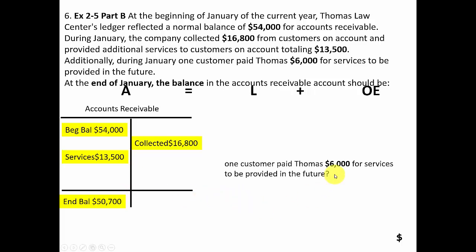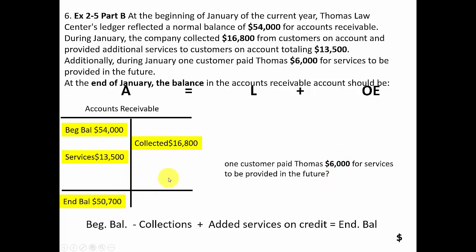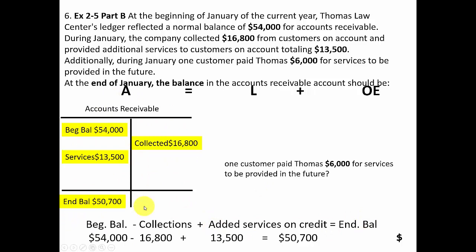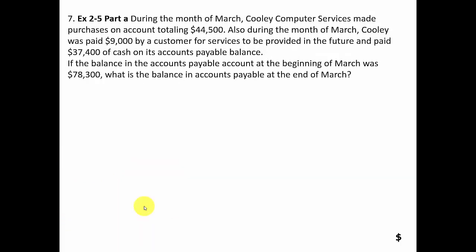Taking the beginning balance of fifty-four thousand, adding thirteen thousand five hundred in services on account, and subtracting sixteen thousand eight hundred in collections gives an ending accounts receivable balance of fifty thousand seven hundred dollars. You can also solve this linearly: beginning balance plus services on credit minus collections equals ending balance. That's question six.